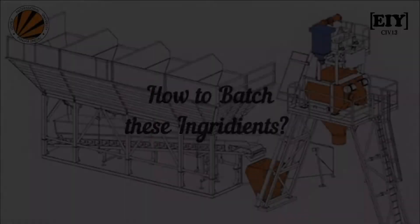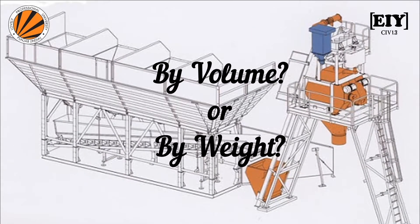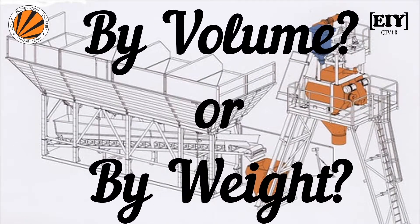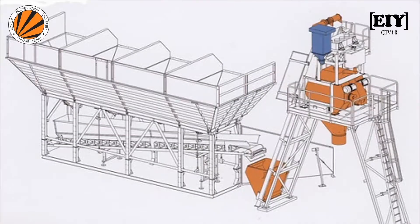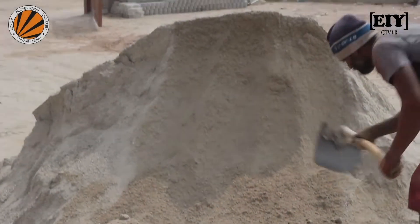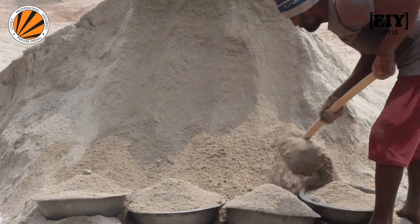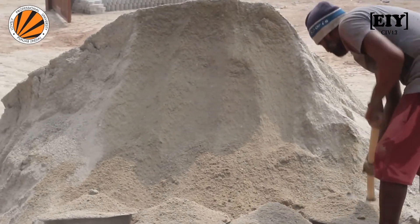The question is: how to batch these ingredients — by volume or by weight? In laboratories and mechanized manufacturing units, batching is done by weight, meaning the ingredients are measured and proportioned by weight, which gives more accurate and reliable results. However, smaller units use volume batching, in which the ingredients are proportioned volumetrically.